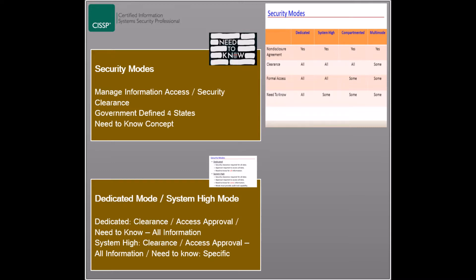The second mode is the system high mode. Similar to the dedicated mode, users must have security clearances and access approval, which allow them access to all the information processed by the system. However, users must have a need to know for specific information and not all information. This means that system high mode users can access some of the data, whereas dedicated system users can access all the information.